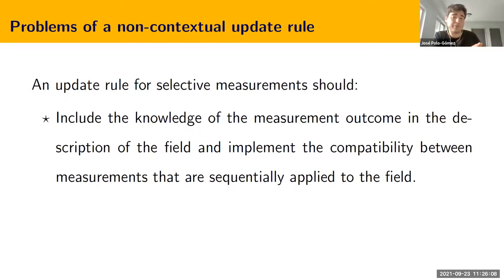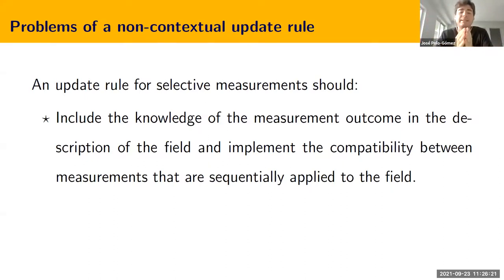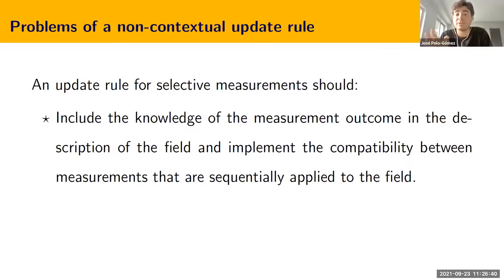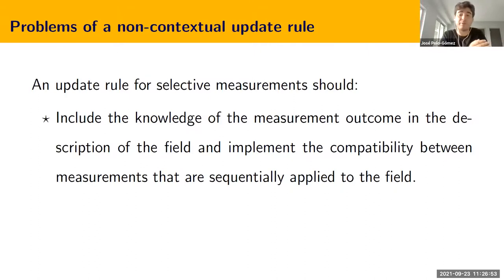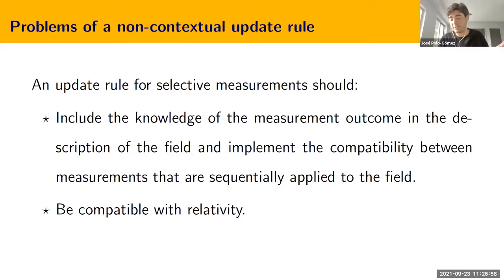After analyzing the non-selective measurement, the article also analyzes the selective update — the calculations are involved but not complicated. What we get is that the selective update does affect expectation values of observables supported in regions space-like separated from the measurement region. This should not be surprising because there are correlations in the field. However, we think a good update rule for selective measurements should include the measurement outcome in the description of the field so that sequential measurements implement compatibility with previous ones, but it should also be compatible with relativity. Even though there are correlations, the update rule is intended to mimic the physical effect of the measurement on the quantum field, and it does not make sense for it to affect observables space-like separated from the measurement region.